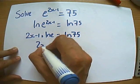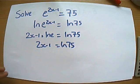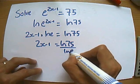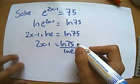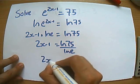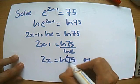And we've got a log of something to the power of something, so let's bring the power down the front and divide by the ln e bit. And of course, if you divide by ln e, we know that evaluates to be 1, so it's just ln 75.